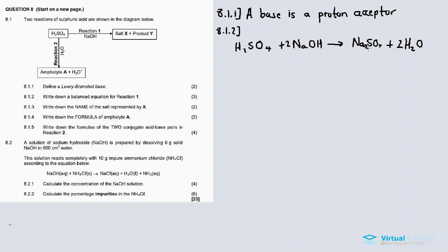8.1.3: Write down the name of the salt represented by X. As mentioned, it is sodium sulfate. The SO₄ comes from sulfuric acid, so it's sulfate. If the metal were magnesium it would be magnesium sulfate; aluminium would give aluminium sulfate, and so on.